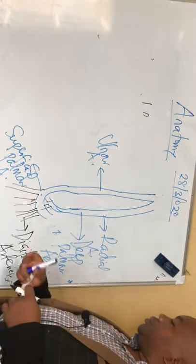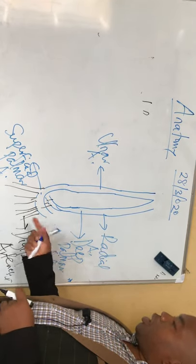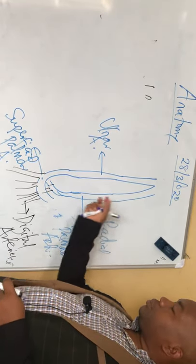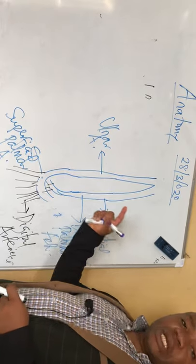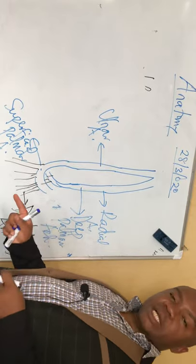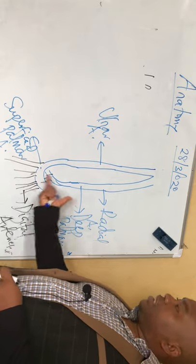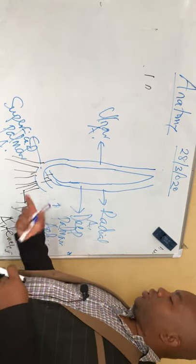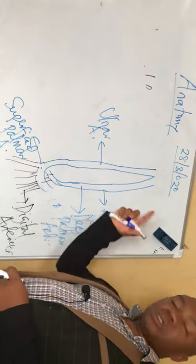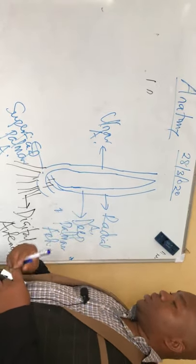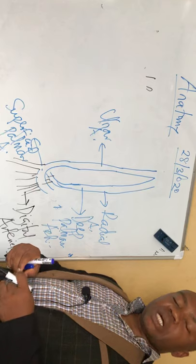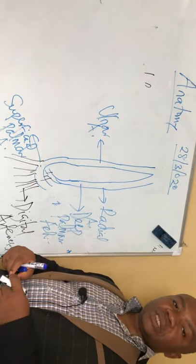In our next lecture I will give you the venous drainage of the entire upper limb and the pectoral girdle. The venous drainage almost mirrors the arterial supply, but in this case the blood is going back to the heart. The same way the arteries supplied these various tissues, muscles, and all of that — that is the same way the veins will drain back to the heart. Thank you so much for listening.